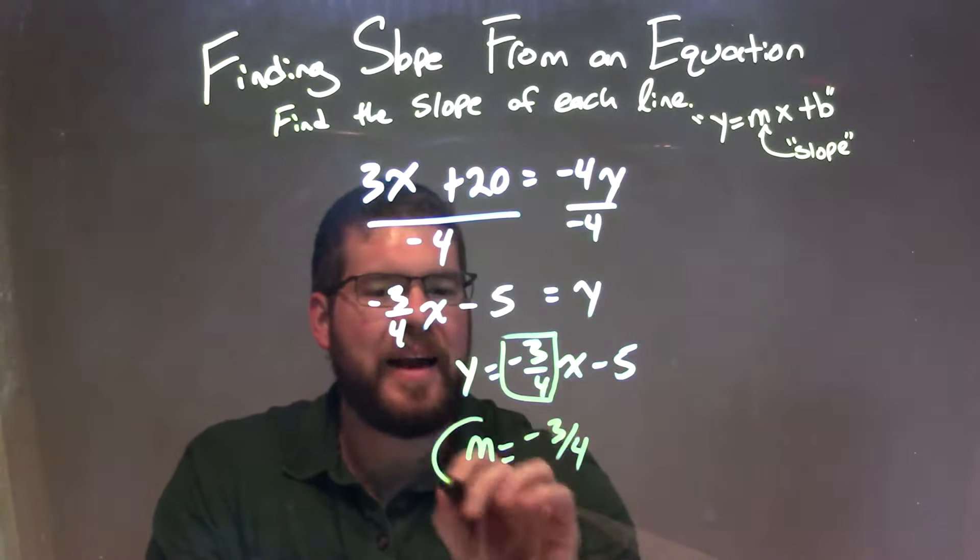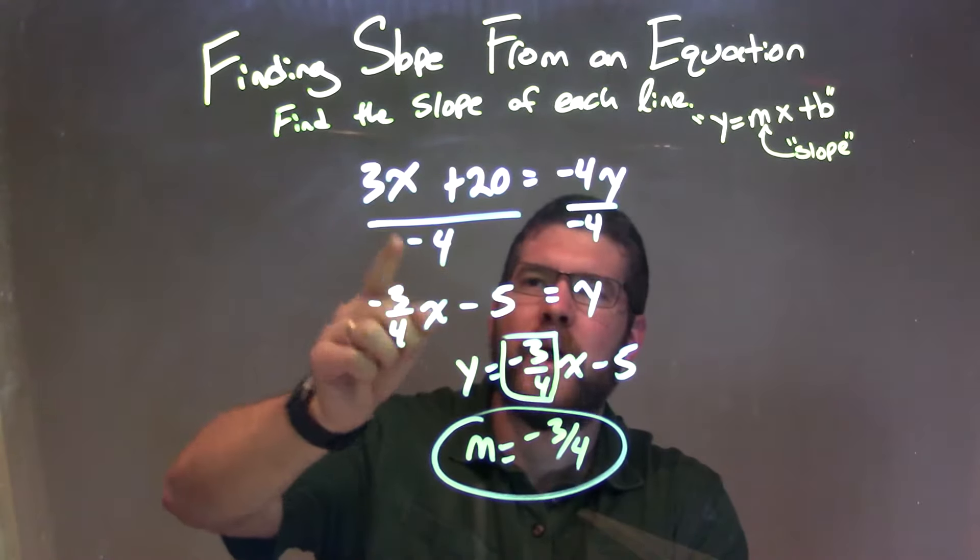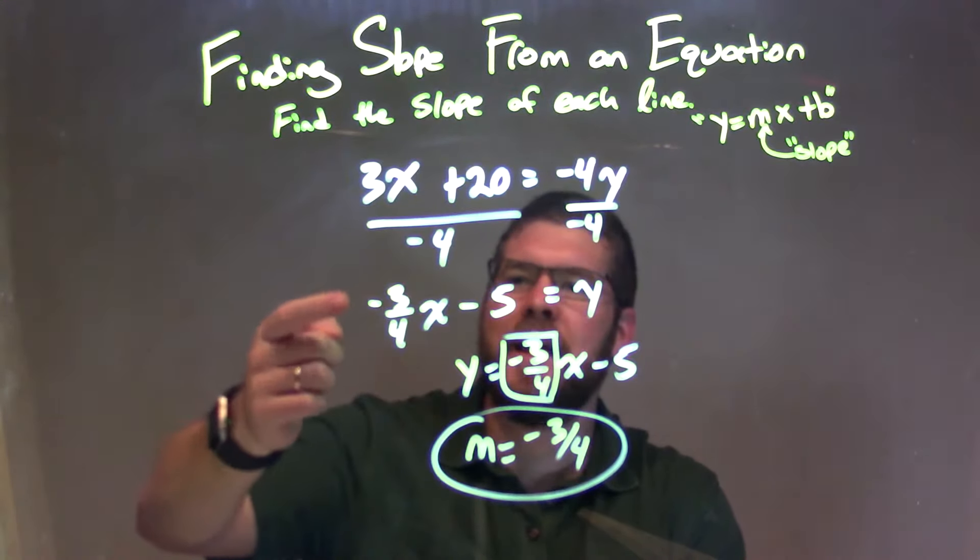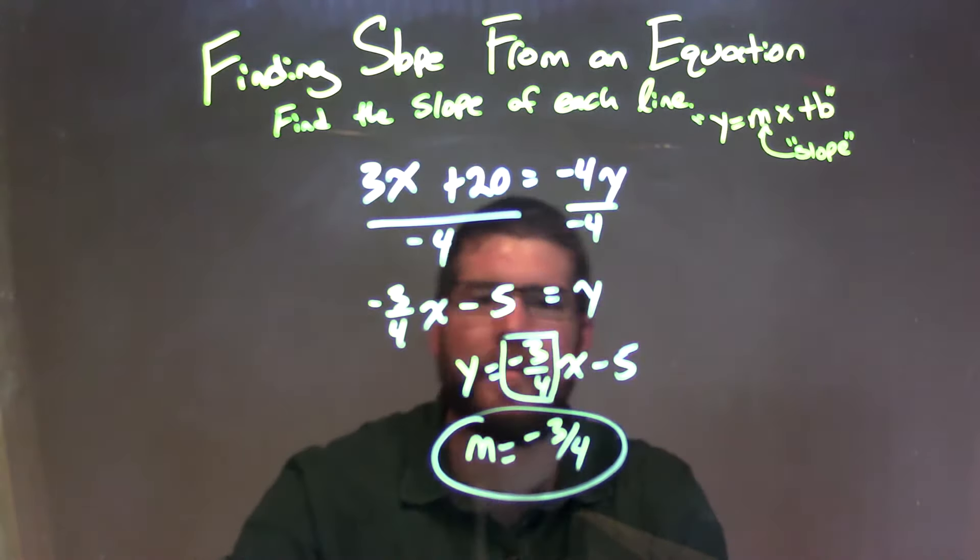So let's recap. We're given 3x plus 20 equals negative 4y. To isolate y, divide both sides by negative 4, making sure to distribute to both parts. And I got negative 3 fourths x minus 5 equals y by itself.